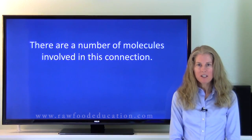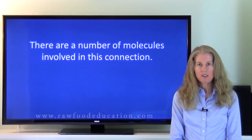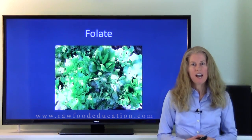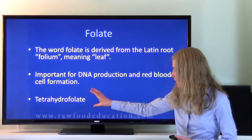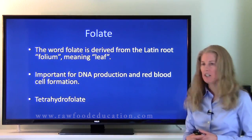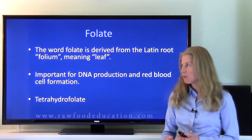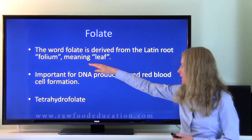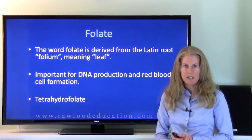There are a variety of different molecules involved in the methylation pathway that involves vitamin B12 and folate, so let's take a look at them. Number one, we have folate. The scientific name for folate is tetrahydrofolate, and folate is important for DNA production and red blood cell formation. The word folate is derived from the Latin root folium, meaning leaf, which makes sense because leafy greens can be a very rich source of folate.